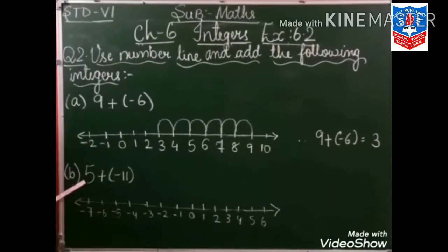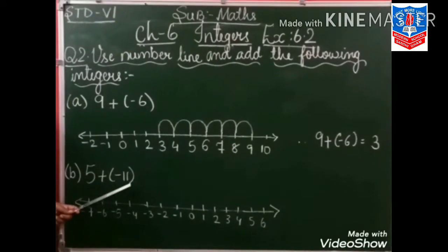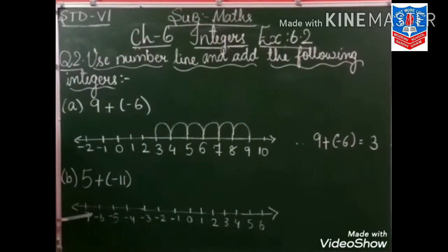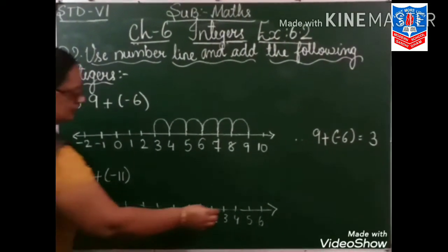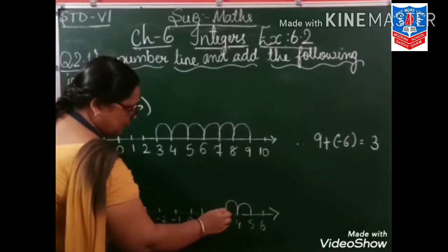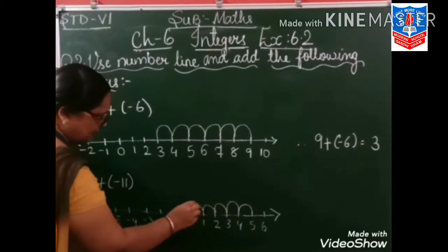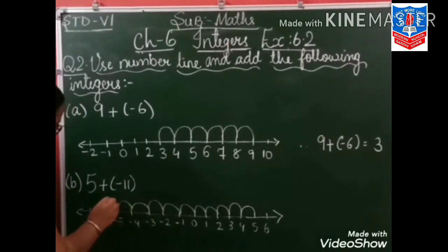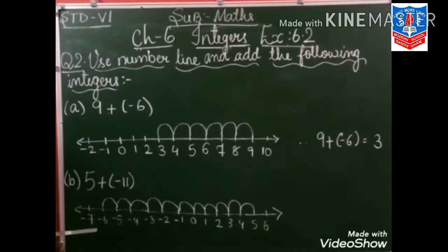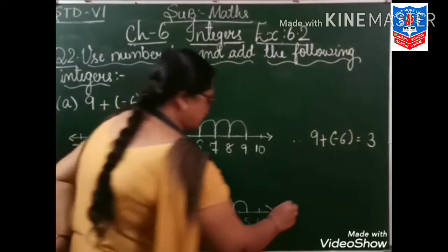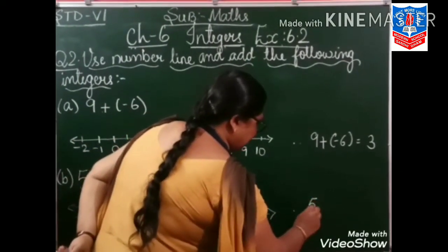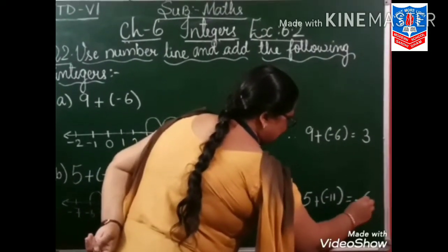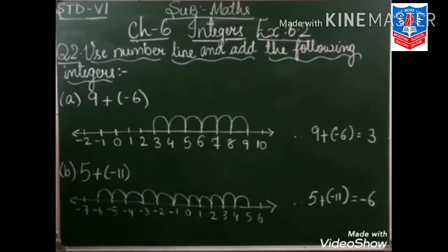Next: 5 plus minus 11. That means from 5 we move 11 steps to the left side. Now what is our answer? Minus 6. So therefore, 5 plus minus 11 is equal to minus 6. Is it clear?